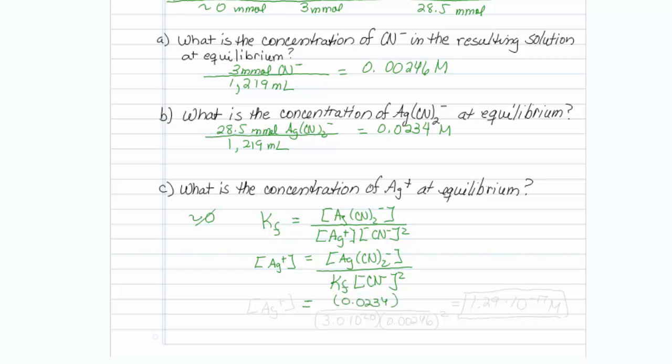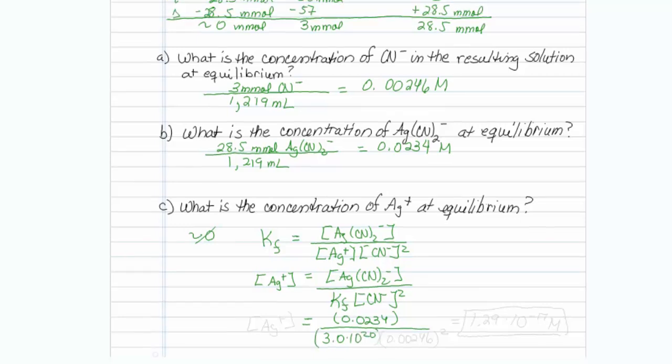Plugging that into my calculator, I have 0.0234 divided by 3.0 times 10 to the 20th times my cyanide, which is 0.00246, and that is squared. Plugging in the math, I am going to get that this is 1.29 times 10 to the minus 17th molar, and that is equal to my silver ion concentration. Well, it might as well be 0, and those are my concentrations.